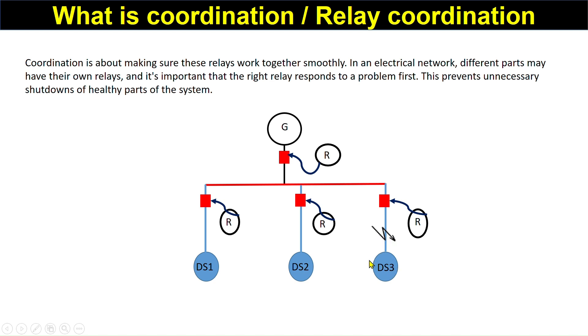Suppose here is a fault in this line or in this distribution. What should happen? First of all, this relay will sense this fault and send a signal to this circuit breaker, and this part should be isolated. Suppose if there is no coordination, what will happen?